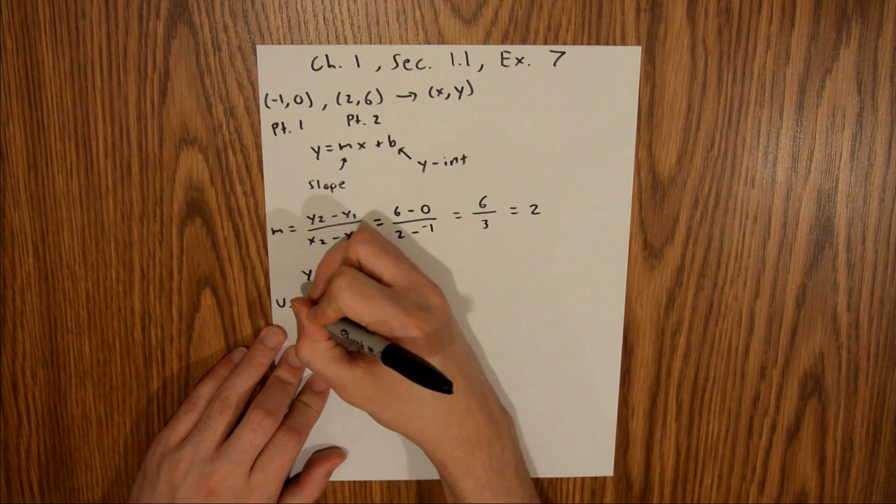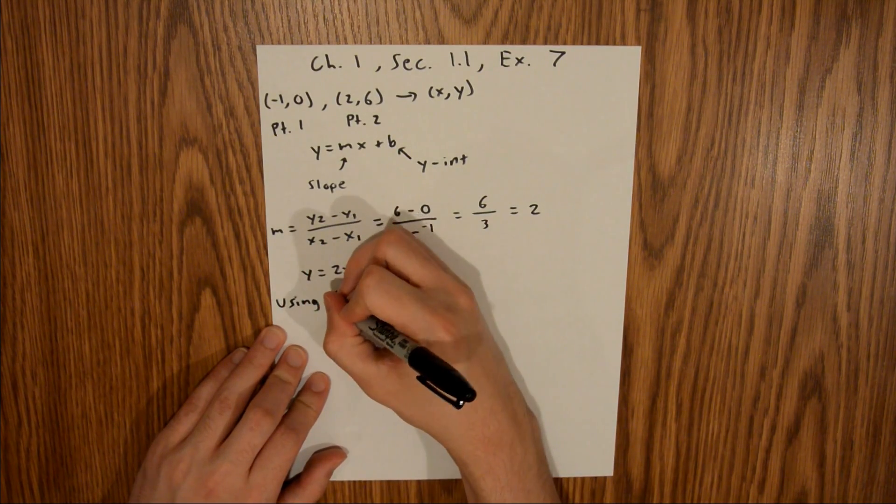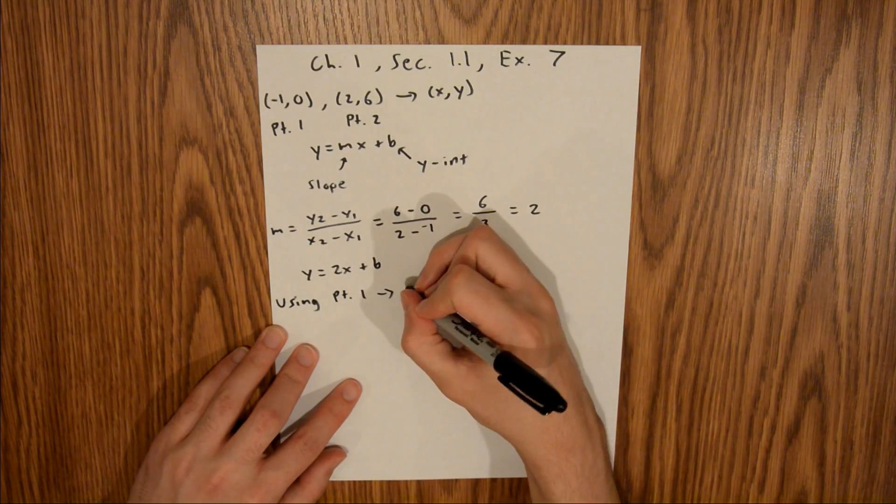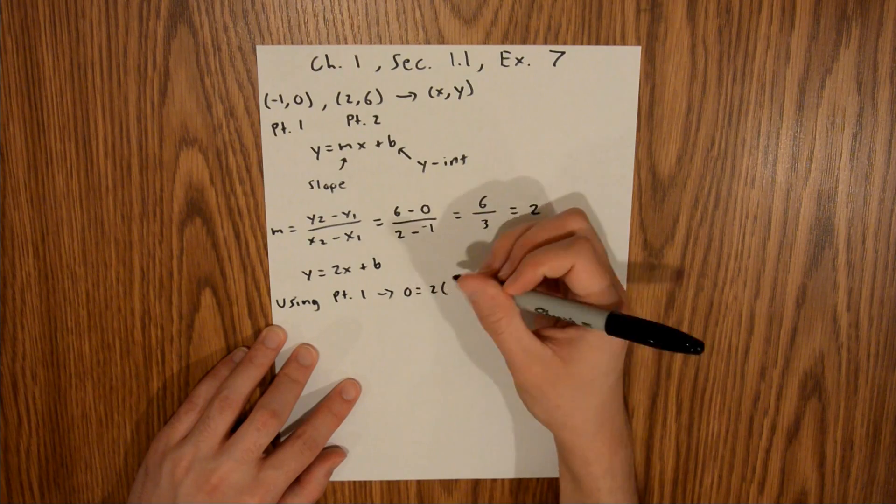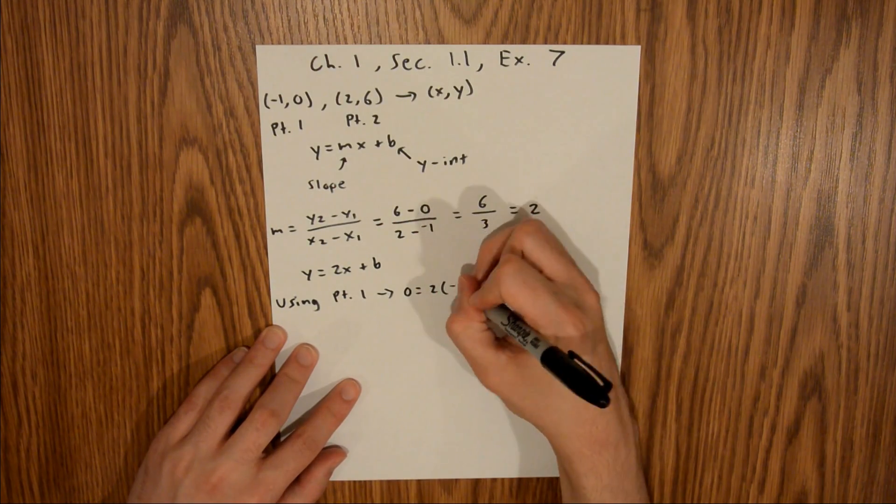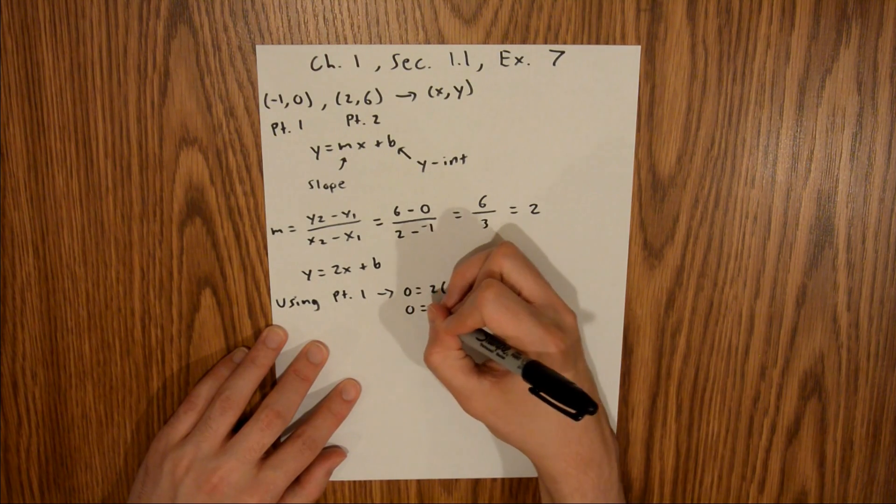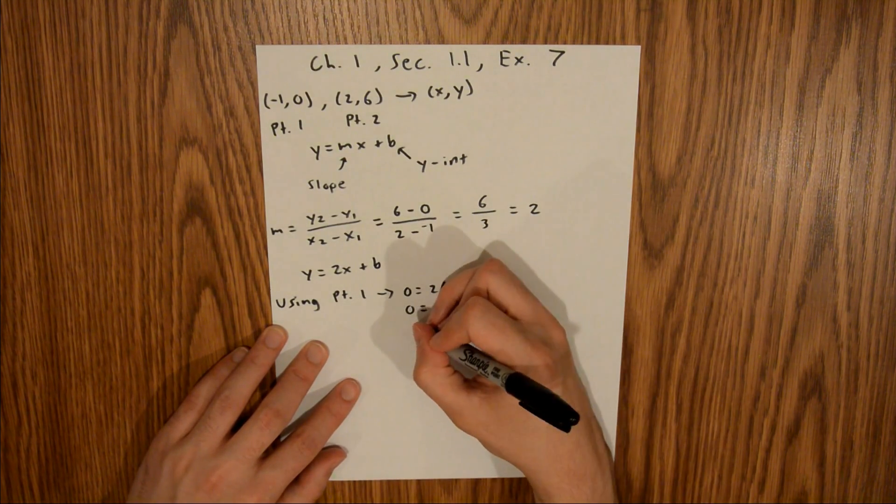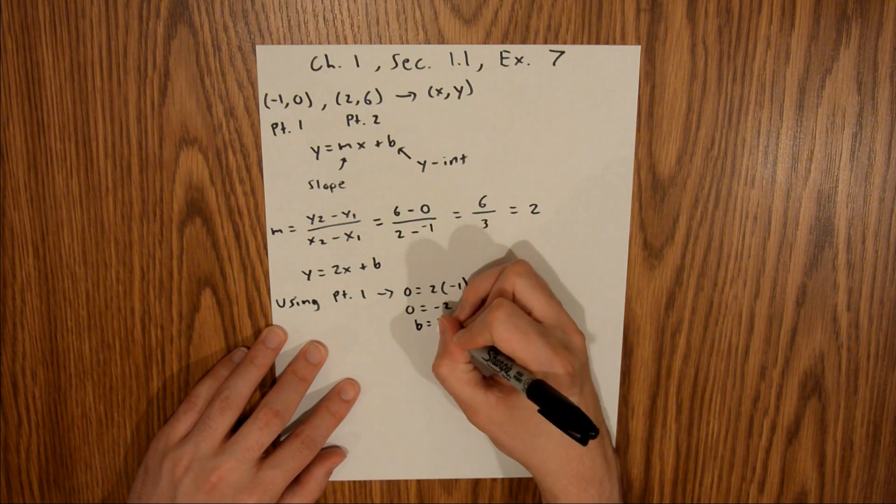your y-coordinate is 0. That's equal to 2 times your x-coordinate, which is -1, plus b. So you have 0 = -2 + b. If you add 2 to both sides, you get b = 2.